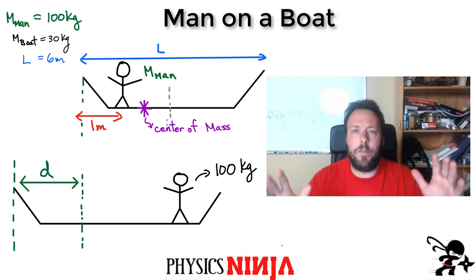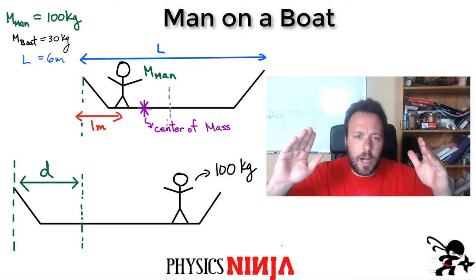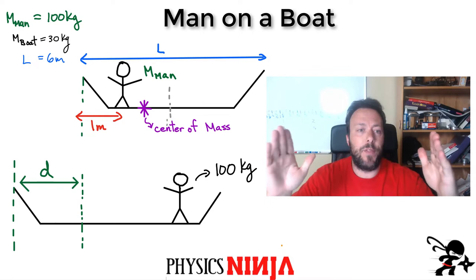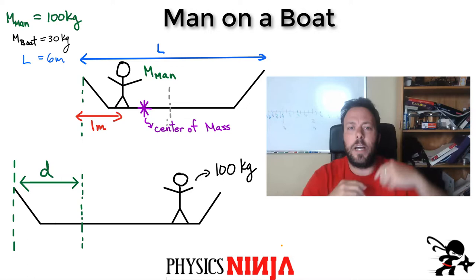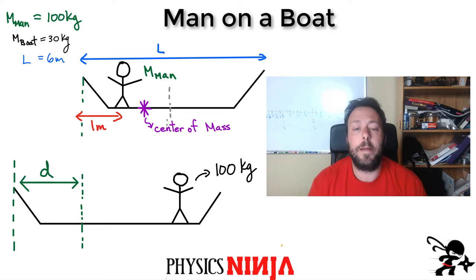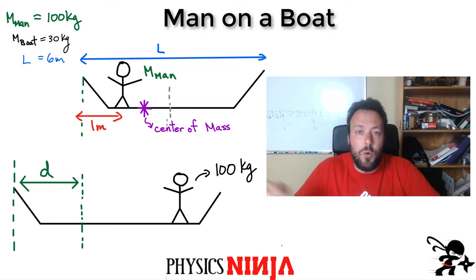Hi everybody, Physics Ninja here. Today I want to look at the problem of the man on the boat. We've got a boat with a length L of six meters, a mass of 30 kilograms, and a man on the boat with a mass of 100 kilograms. He's going to walk five meters across the boat.